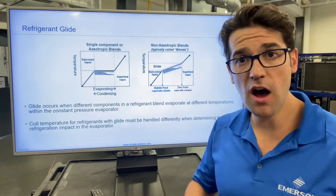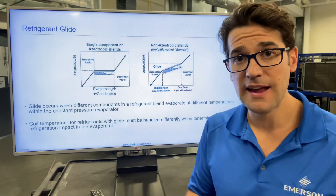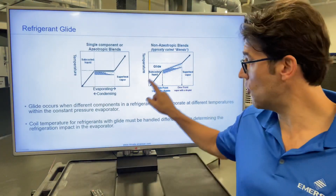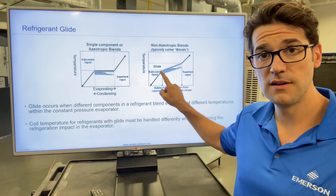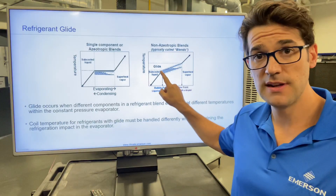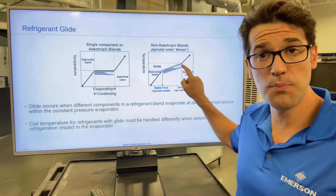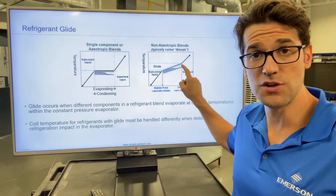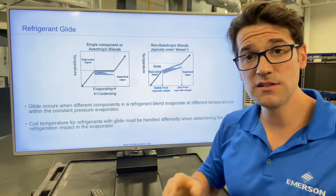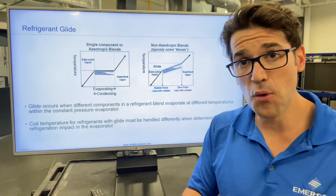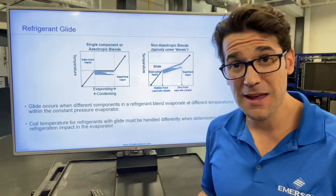they're going to have a high glide. And what glide means is that the bubble point temperature is different than the dew point temperature at a constant pressure, because the refrigerants are boiling off at different temperatures.